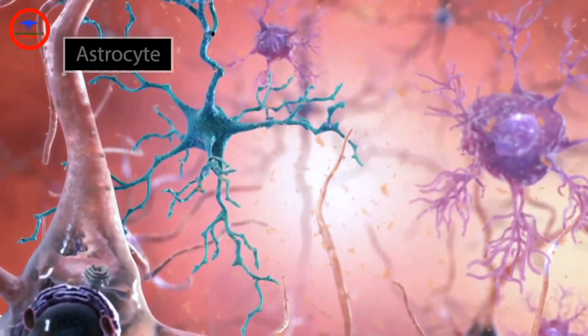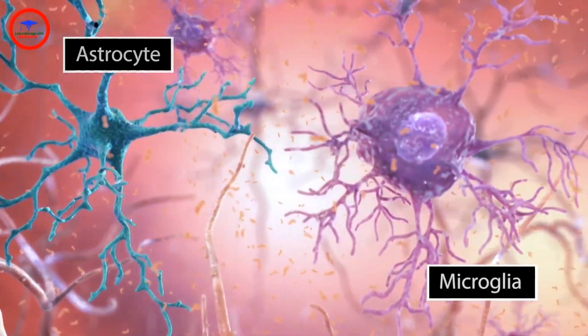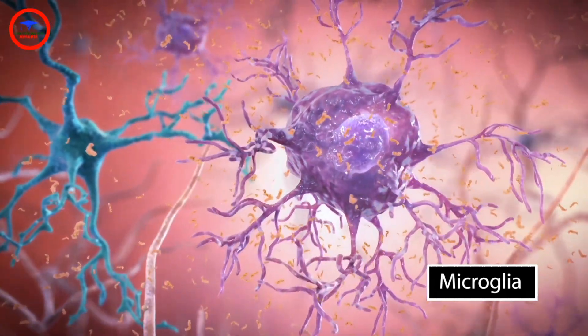Other cells in the brain, such as astrocytes and microglia, clear away debris and help keep neurons healthy.